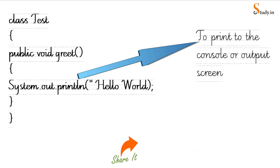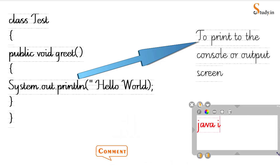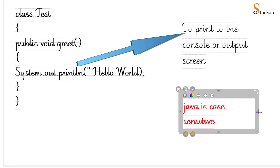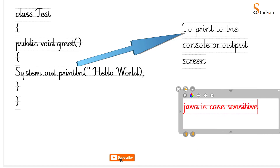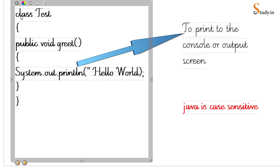Java is a case-sensitive language. That means what is written in small letters must stay in small letters, and what is written in capital must stay in capital. For example, 'class' is all in small letters, but the 'T' in 'Test' is capital because it is a user-given name.